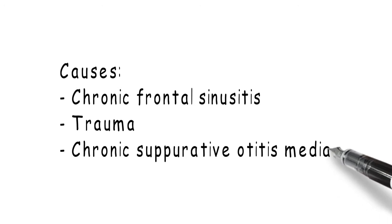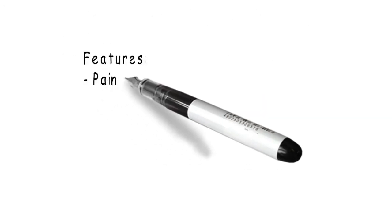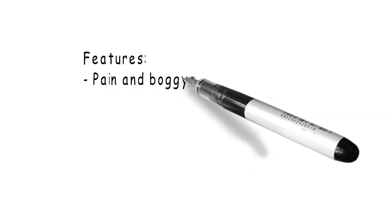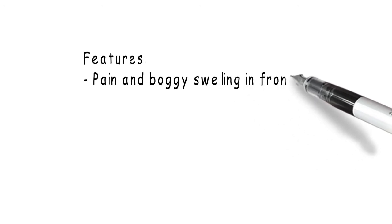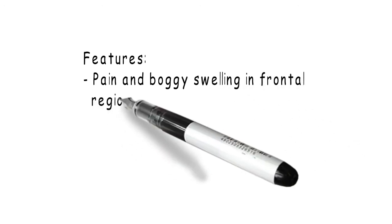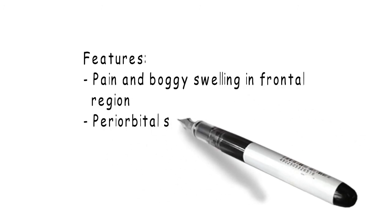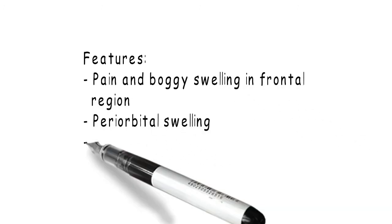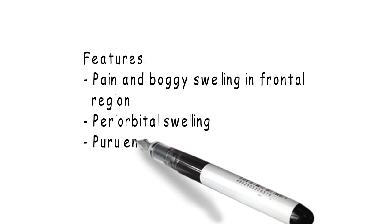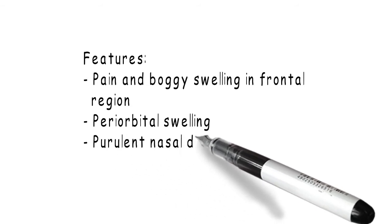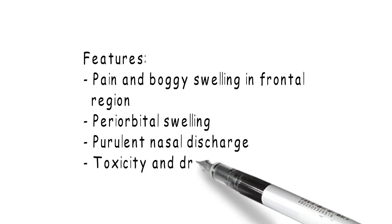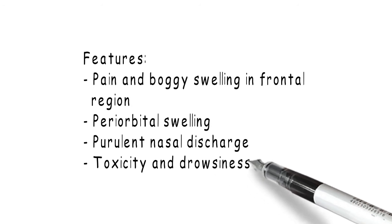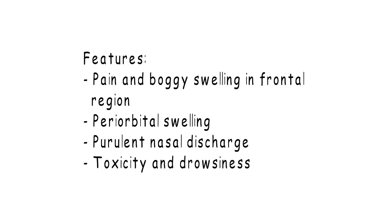Pott's Puffy Tumor can present as a boggy swelling in the frontal region which is painful. It also presents with periorbital swelling, purulent nasal discharge, and the patient appears toxic, drowsy, and ill-looking.